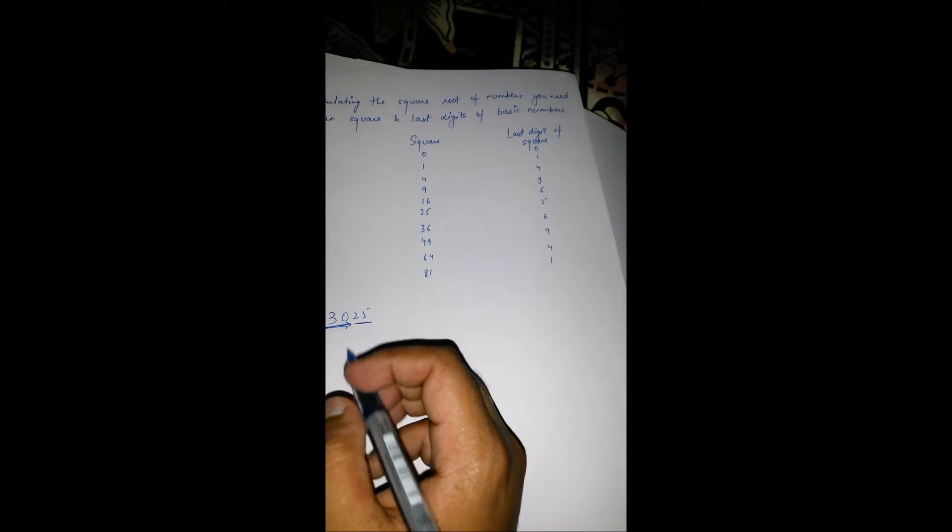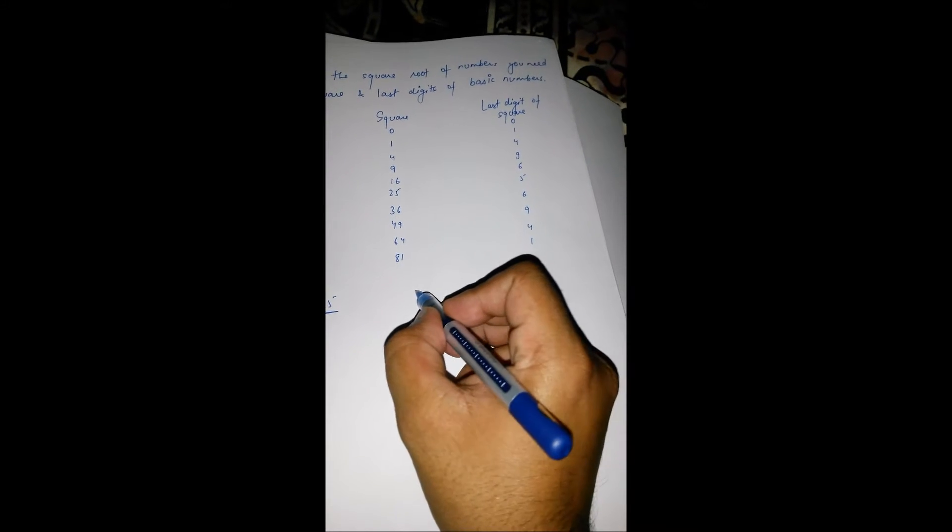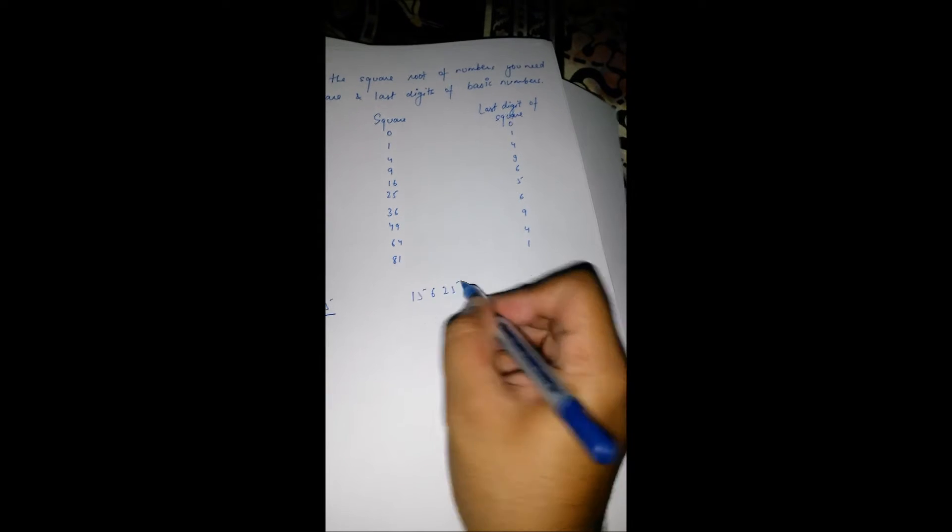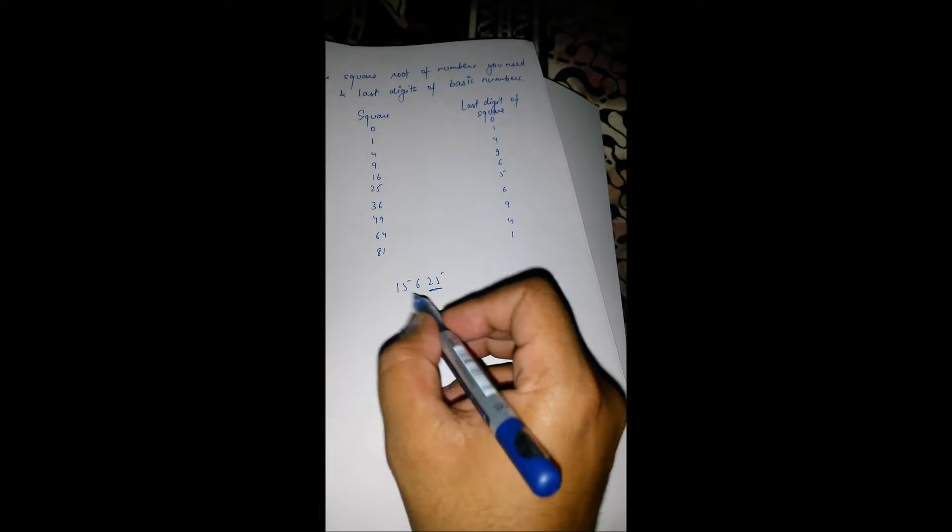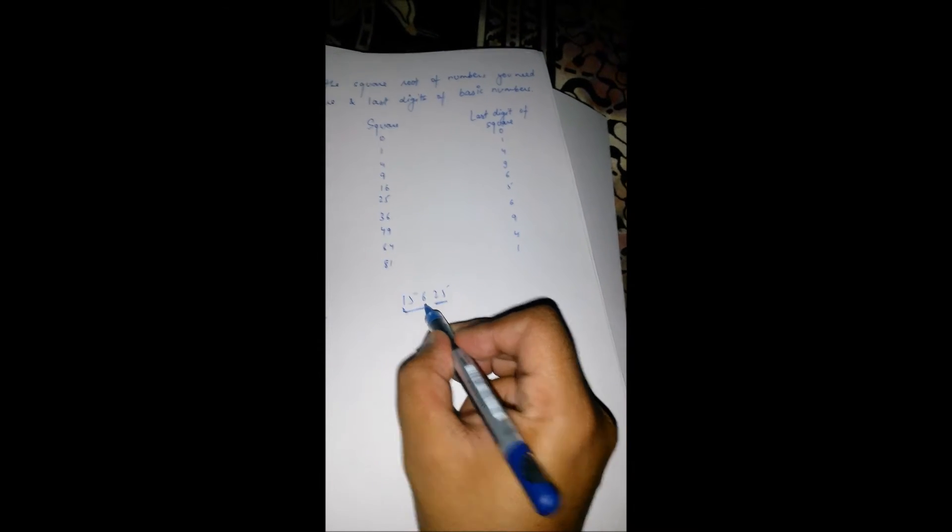In various questions, we get three or more digit numbers. Then, in that case, we divide it into two groups. Like in this case, we take the first group and the second group is of the remaining number.